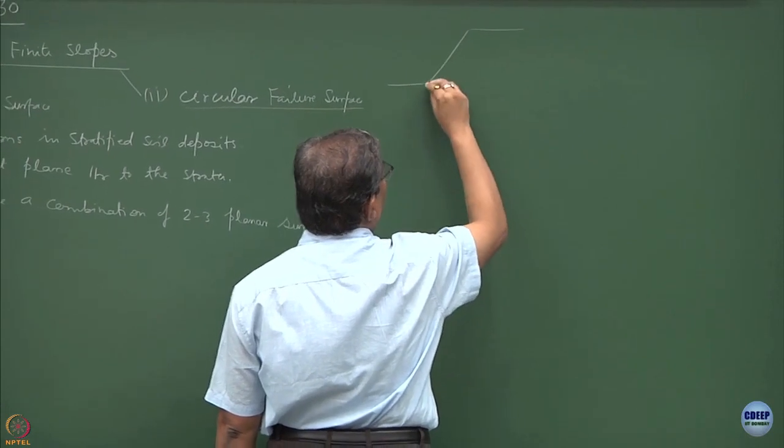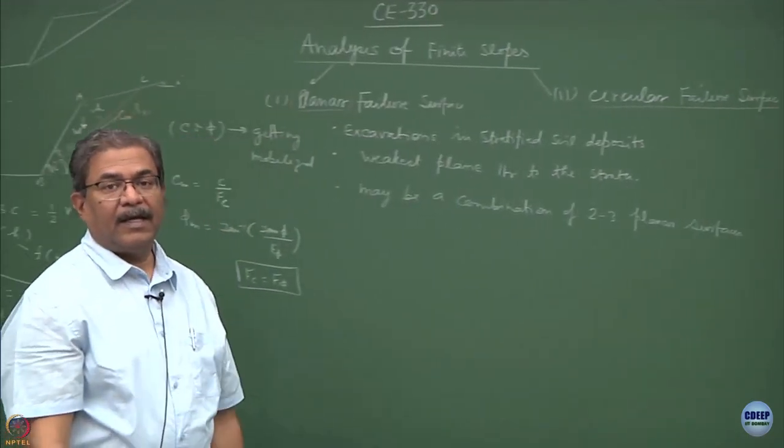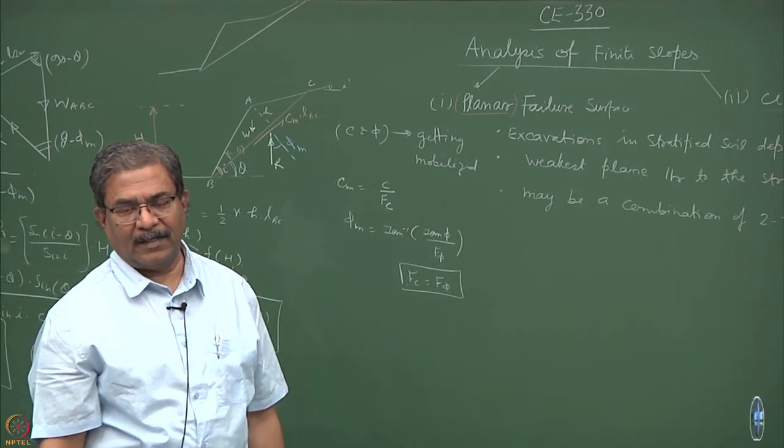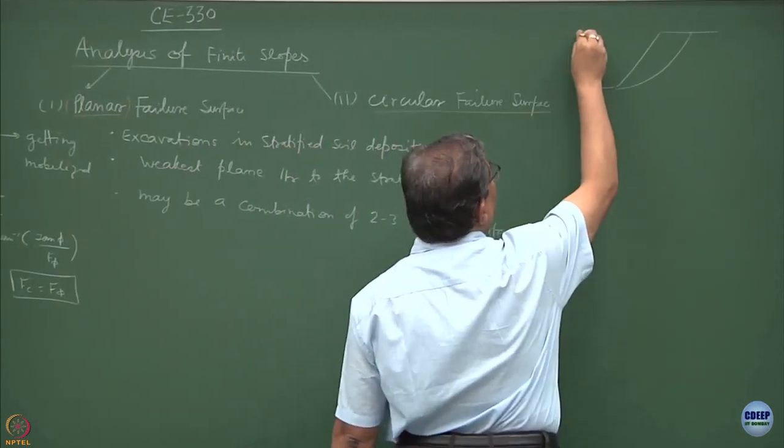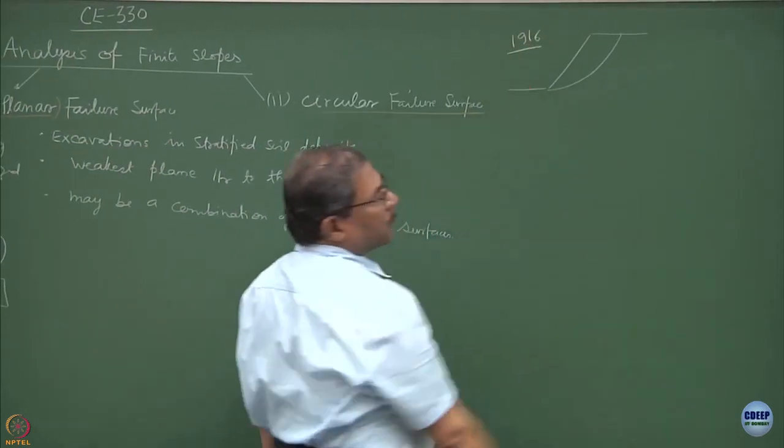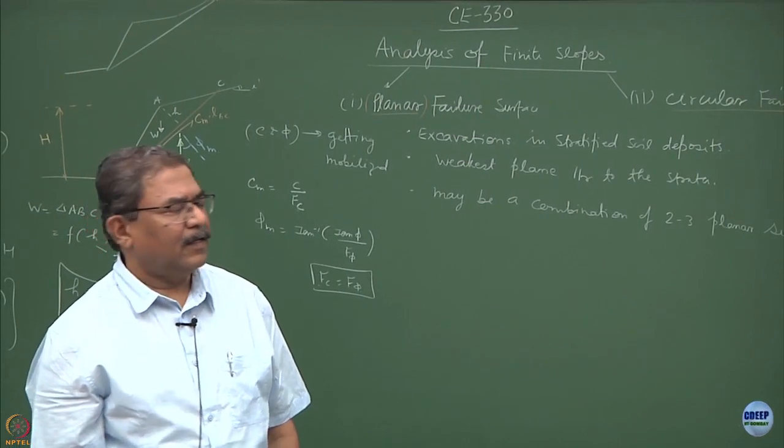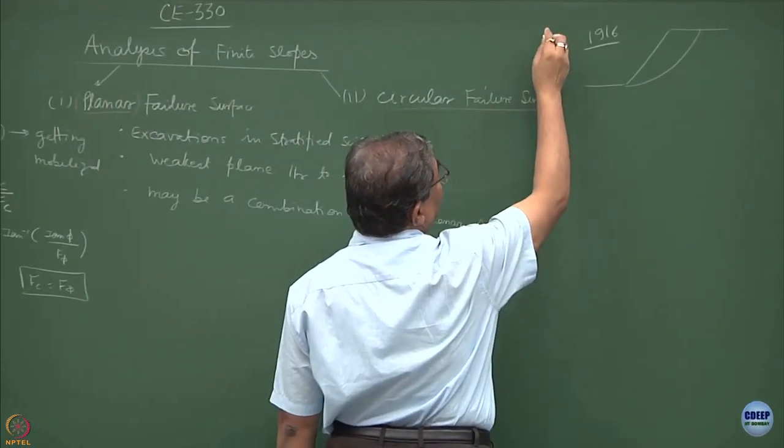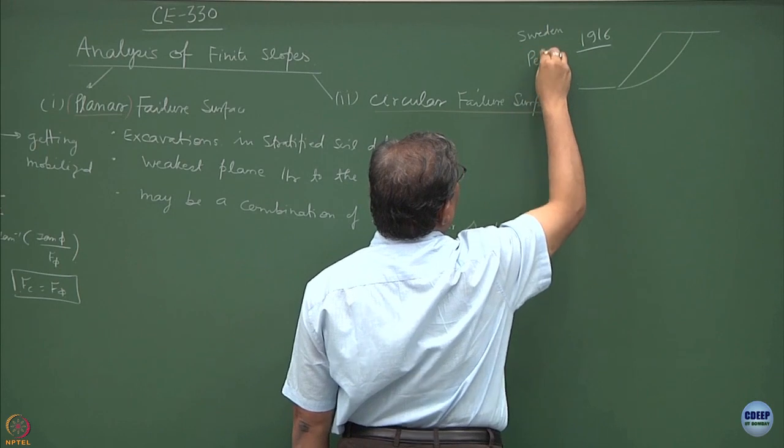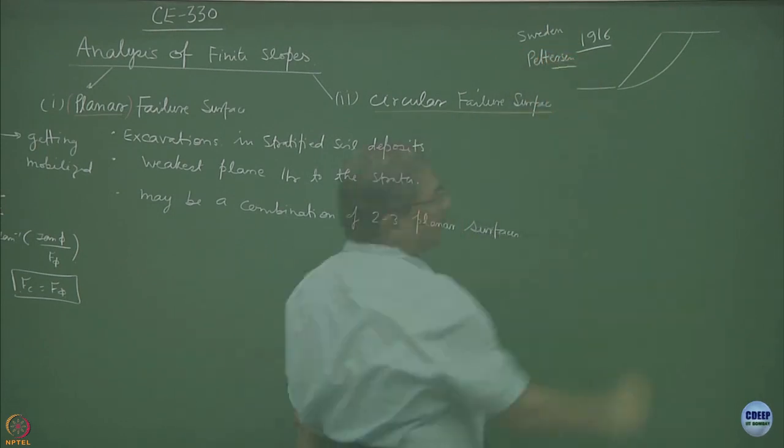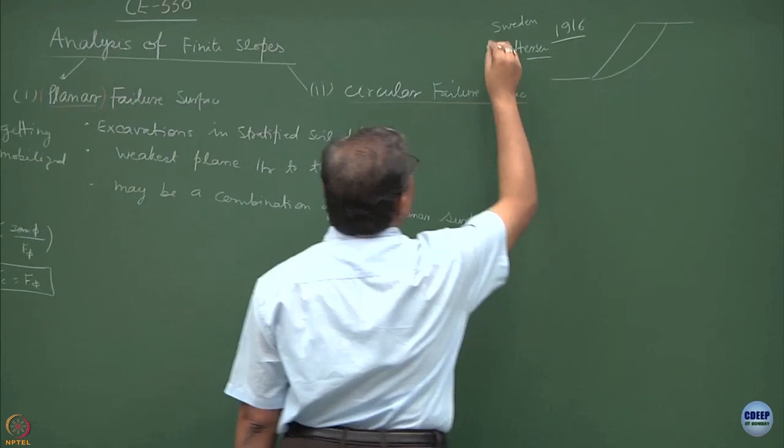This is the slope and the failure is going to be along this surface, which is a part of circle or it could be a circle depending upon the material properties. The genesis of this analysis is 1916, mostly subscribed to people working in Sweden, that is why we call this method the Swedish circle method by Pettersson. This is attributed to the Swedish geotechnical society.